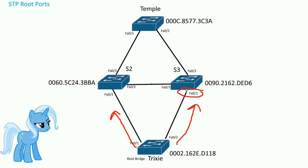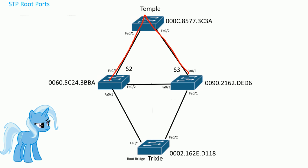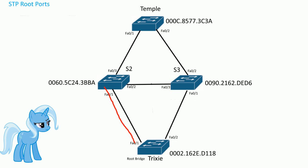When S2 and S3 receive the BPDU on their fast ethernet ports, they each add a cost of 19. So S2 and S3 now know it costs 19 to reach the root bridge. All switches exchange that information. For example, S2 going through various paths costs 19+19+19 = 57, or another path costs 19+19 = 38, or directly costs 19. We try to find the lowest cost path to the root bridge.